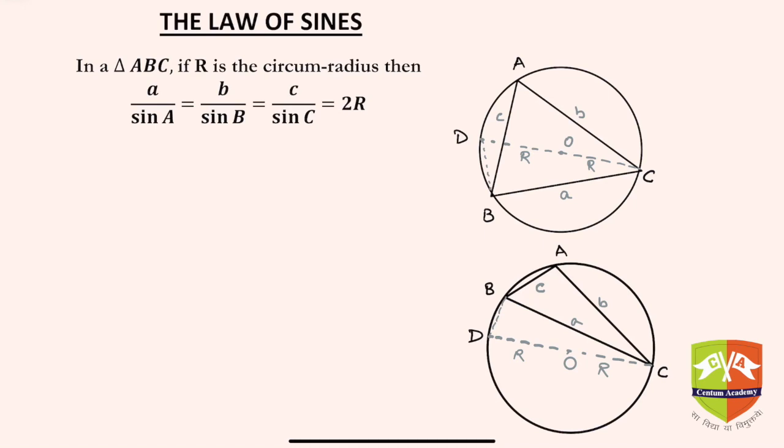Hello friends, in this video we are going to discuss the law of sines. Most of you know that in a given triangle, a by sine A equals b by sine B equals c by sine C, and it is equal to twice the circum radius.